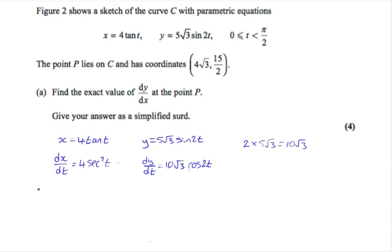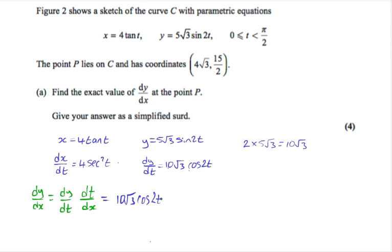Using the chain rule for differentiation, dy/dx — since x and y are both given in terms of t, we put dt here and here, splitting it up. To work it out, we substitute the values we've just worked out. So it's dy/dt, which is 10 root 3 cos 2t, times dt/dx. dt/dx is 1 over dx/dt, so times by 1 over 4 sec squared t.